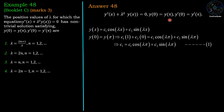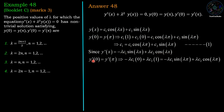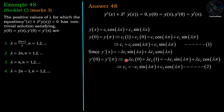For the second condition y'(0) = y'(π), we differentiate y to get y' = −λc₁sin(λx) + λc₂cos(λx). Substituting x = 0 gives λc₂, and x = π gives −λc₁sin(λπ) + λc₂cos(λπ). Dividing both sides by λ, the second equation becomes: c₂ = −c₁sin(λπ) + c₂cos(λπ).